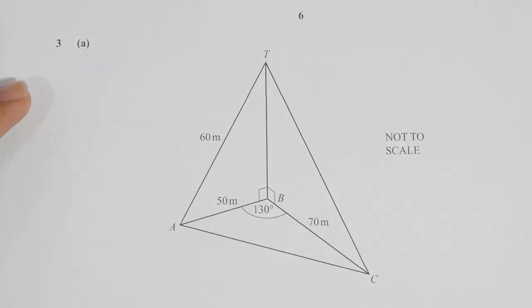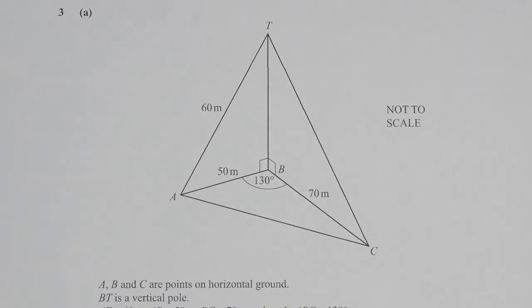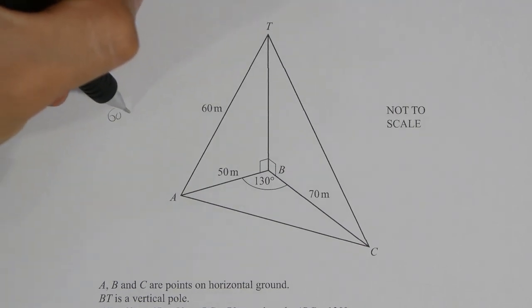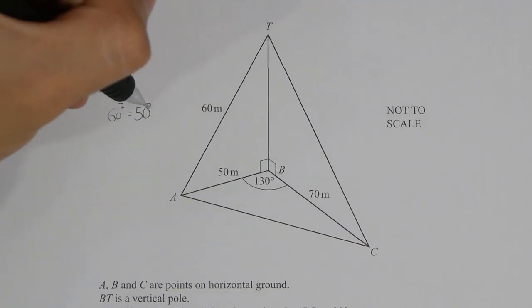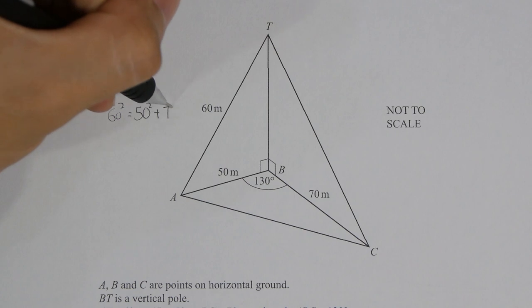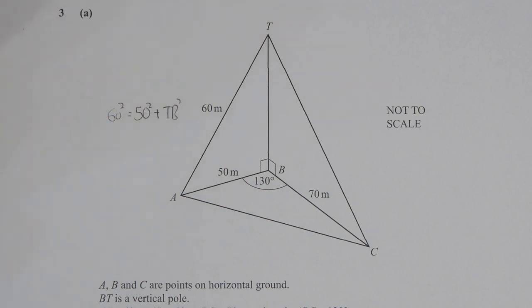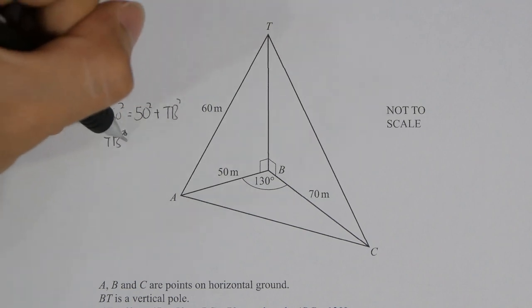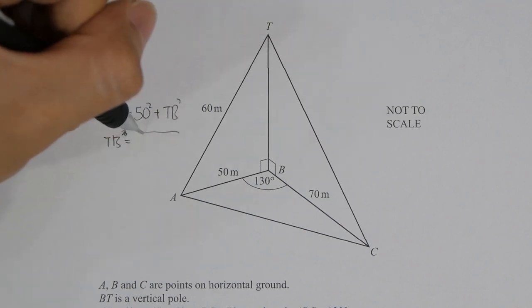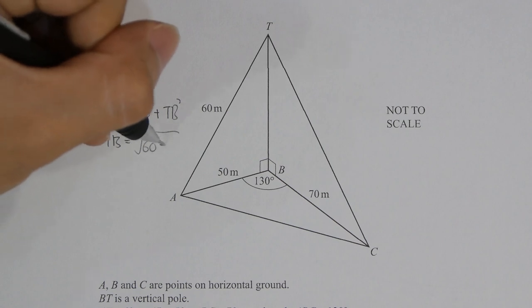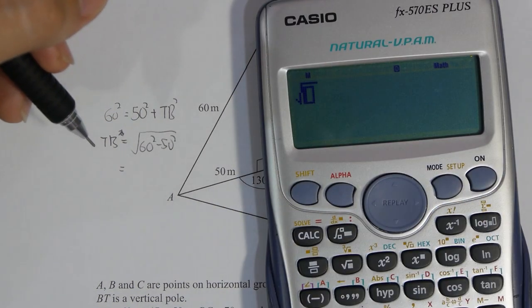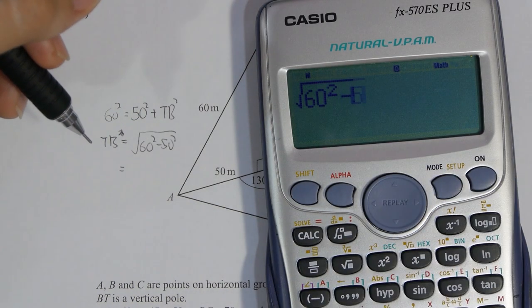For question 3A, I first calculated TB's value using Pythagoras theorem. After the calculation, I get 10 root 11, which is equivalent to 33.17. For the angle of elevation of T from C, now that we have the value of the opposite and adjacent, using tangent inverse, angle TCB's value is 25.35 degrees.